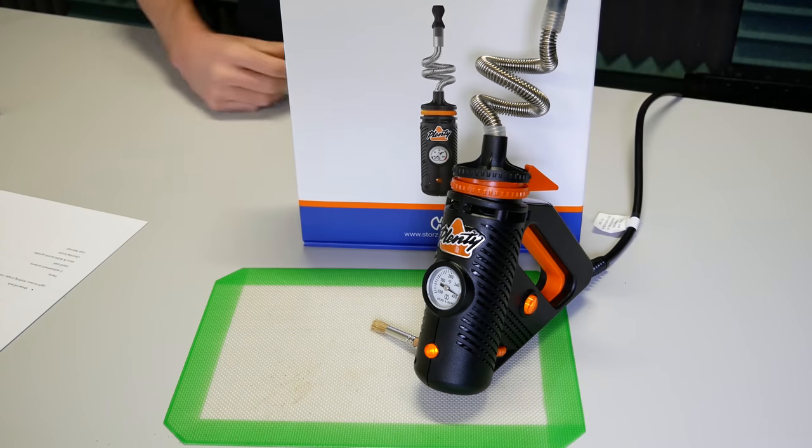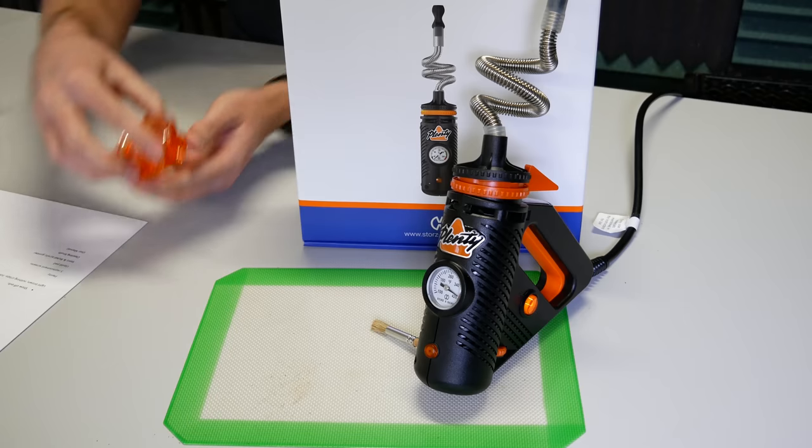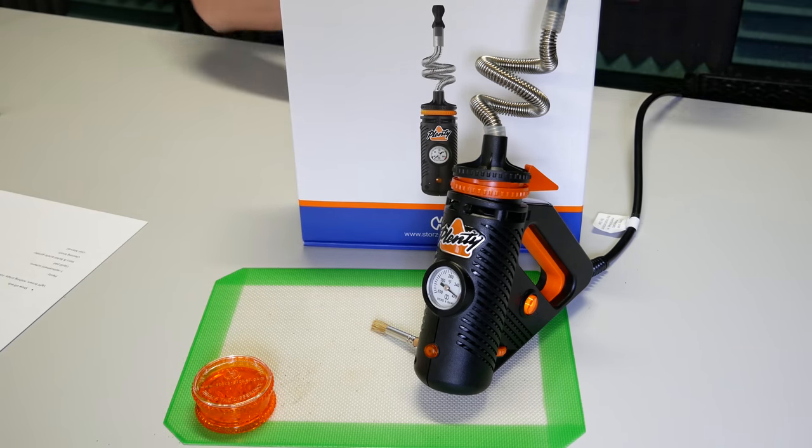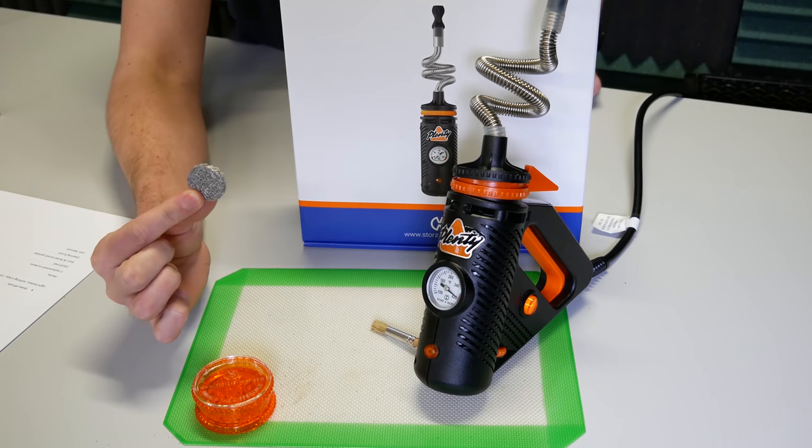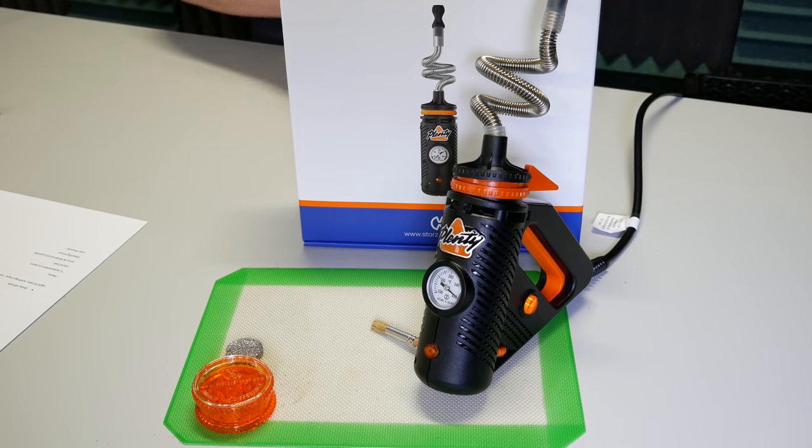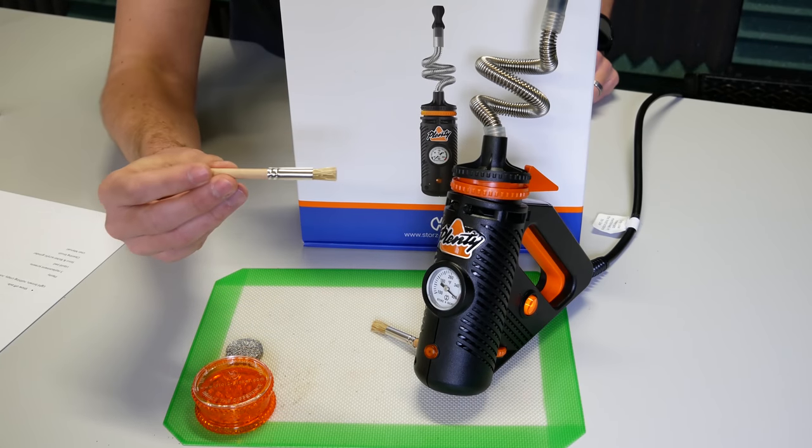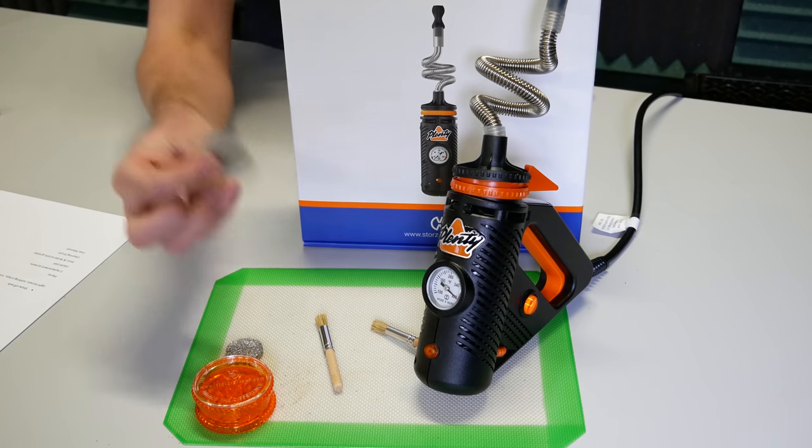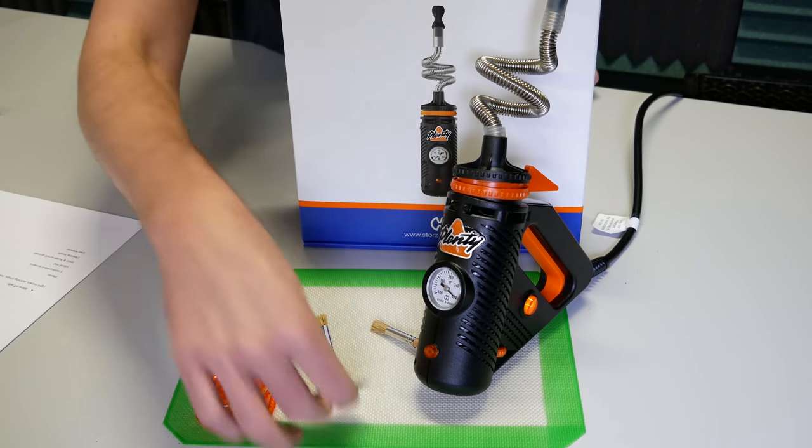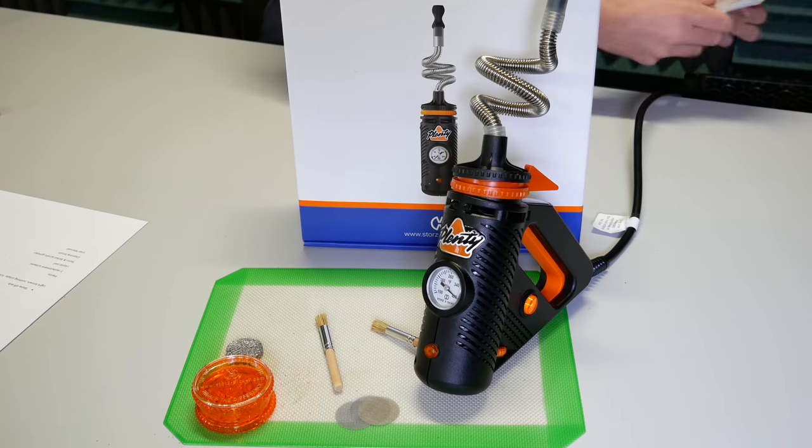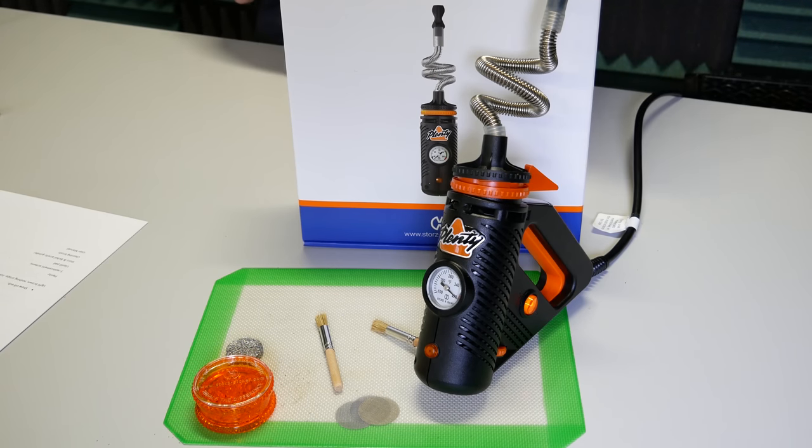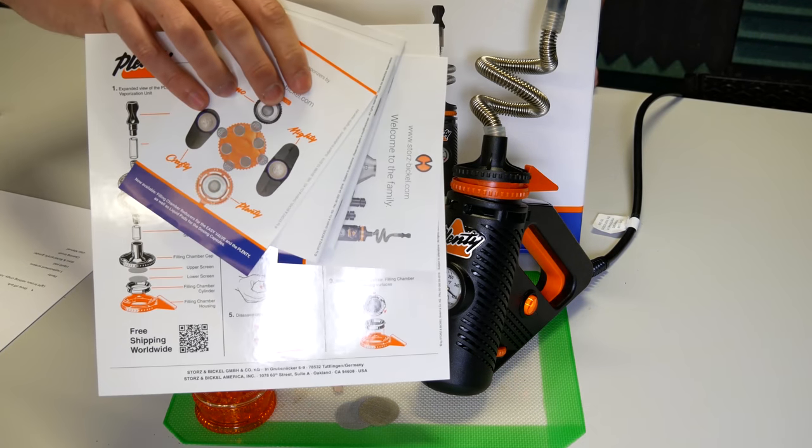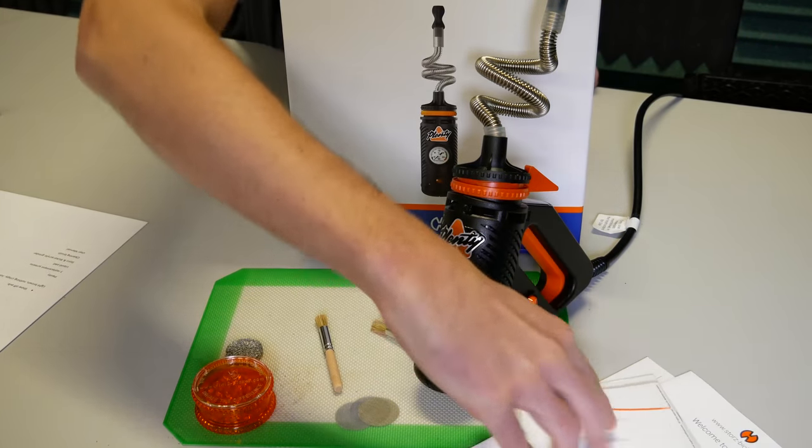That's the Plenty box, the newest box. The Plenty comes with an acrylic grinder, a liquid pad, a cleaning brush - same one I'm using right there - a few replacement screens, always nice to have, and of course lots and lots of documentation.